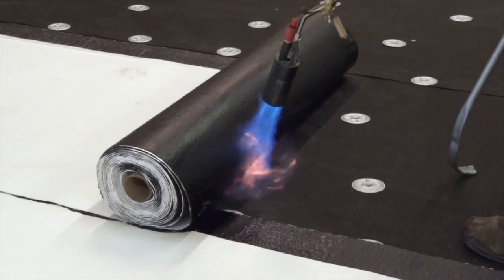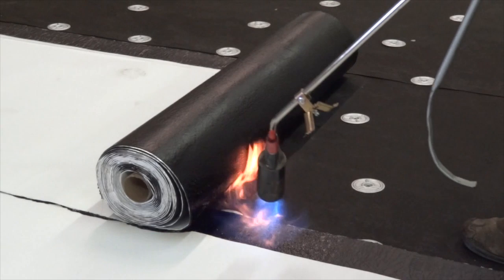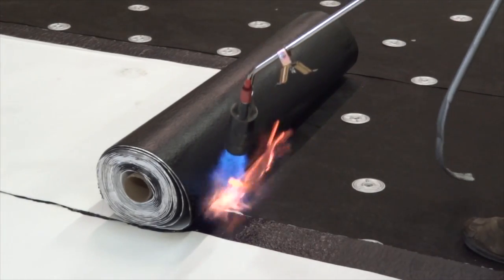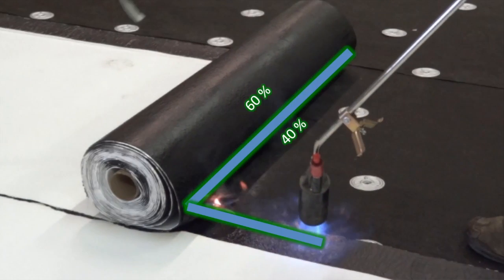In optimum conditions, move the flame from side to side in the shape of an L, applying about 80% of the heat to the membrane and 20% to the substrate. In colder temperatures, more heat may be necessary on the substrate by applying 60% to the membrane and 40% to the substrate.